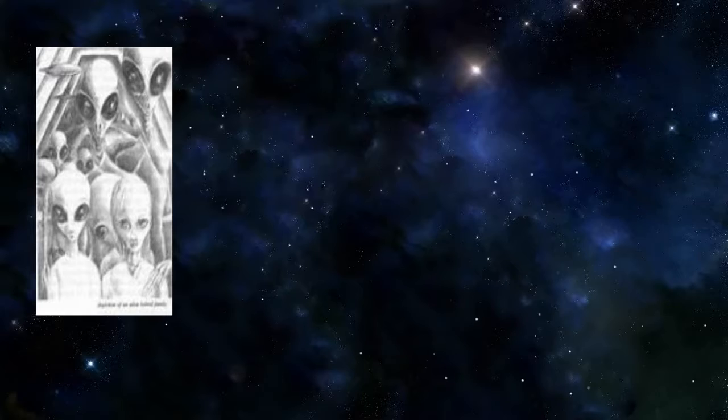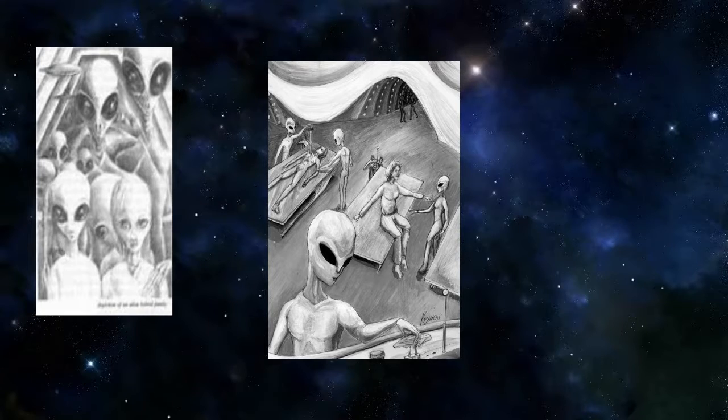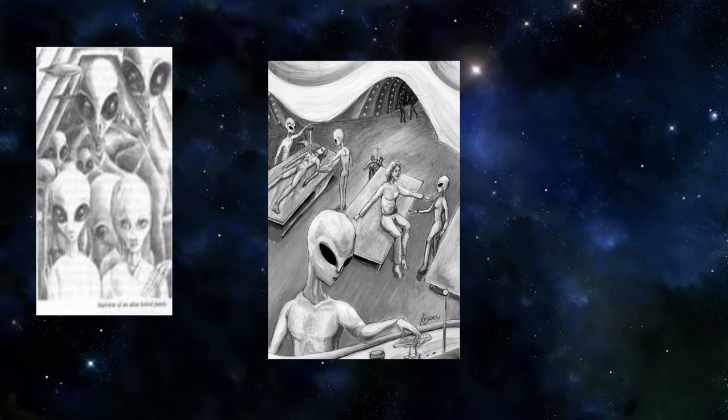There are also several claims that the grey species is split into two sections. The leaders who appear more intelligent and are far taller, standing at eight feet tall. They also appear to be the scientists and intellectuals of the group. And the workers who seem to carry out the more mundane tasks of abduction and strapping people down to operating tables.